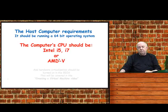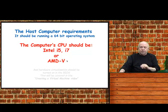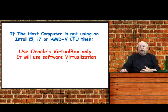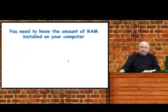The computer's CPU should be an Intel i5, i7, or AMD-V, and that's because it needs what's called virtualization — so it needs a specific processor. If the host computer doesn't have it, then you can use Oracle VirtualBox because it uses software virtualization and you can get around it. It says it will work, so it probably does.